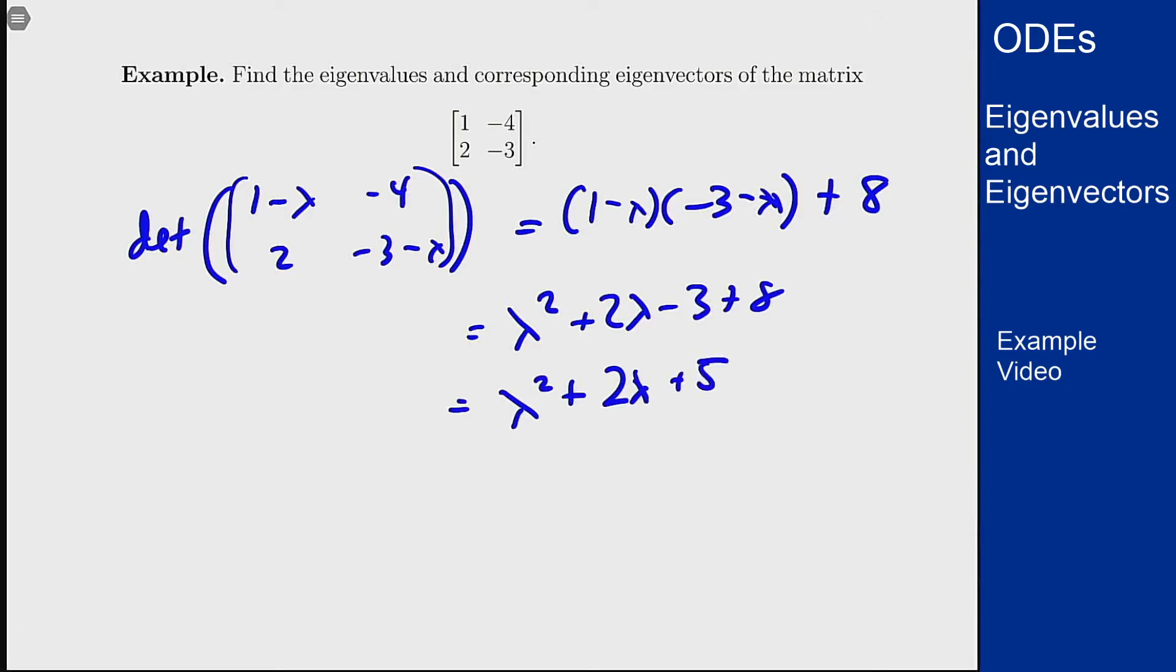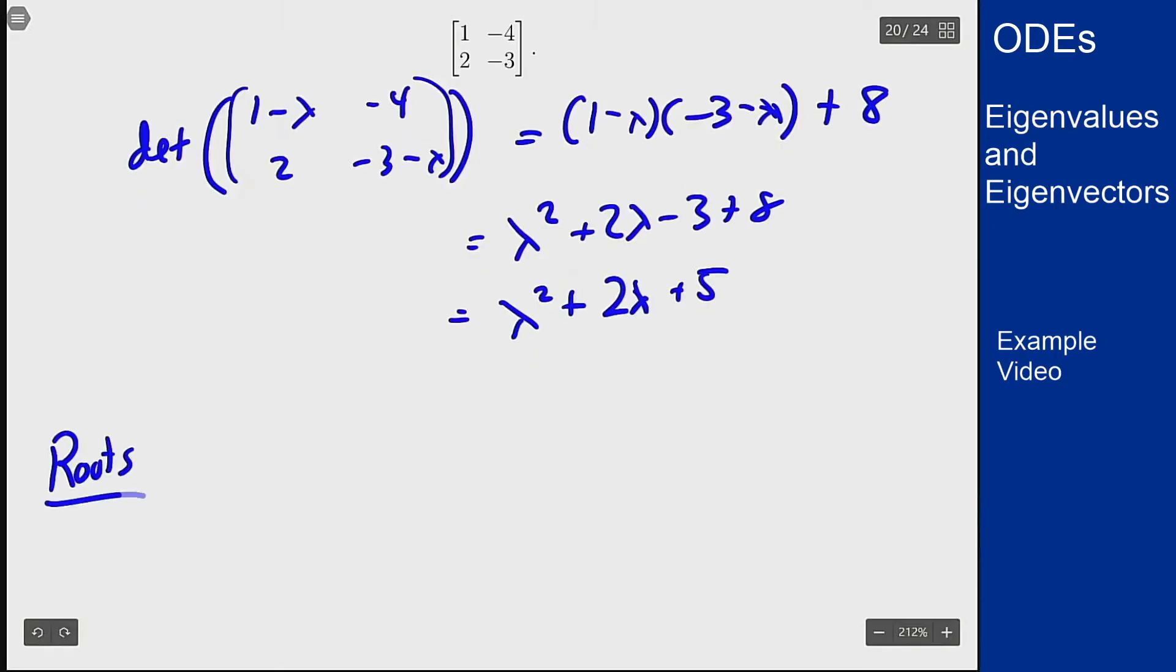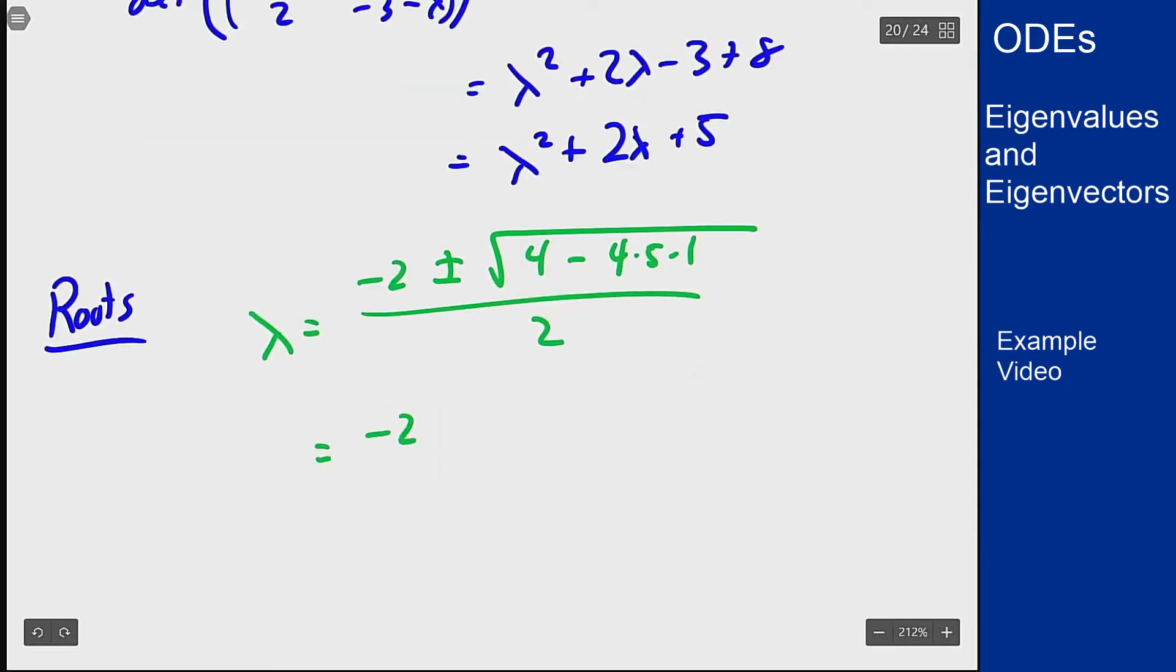This doesn't factor but we can use the quadratic formula to find the roots. Lambda is negative 2 plus or minus the square root of 2 squared which is 4 minus 4 times 5 times 1 over 2, which is negative 2 plus or minus the square root of negative 16 over 2, which is negative 1 plus or minus 2i. We have complex eigenvalues here.